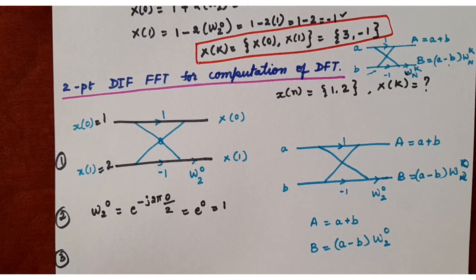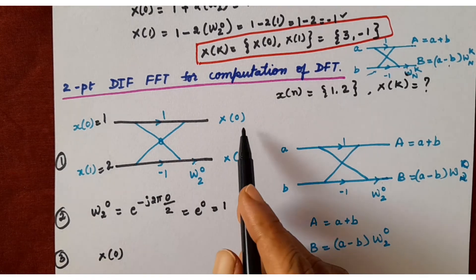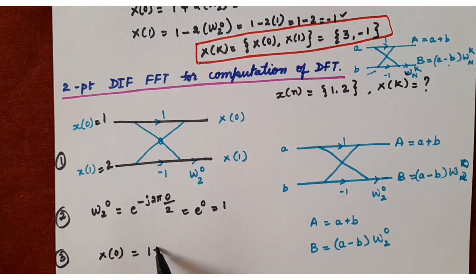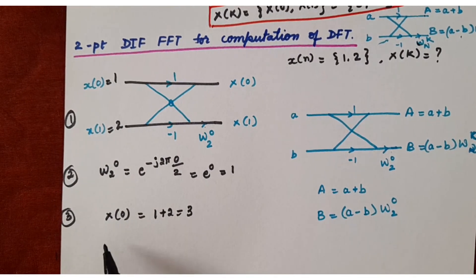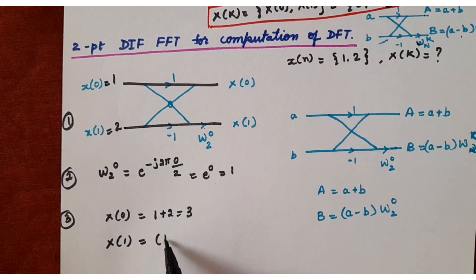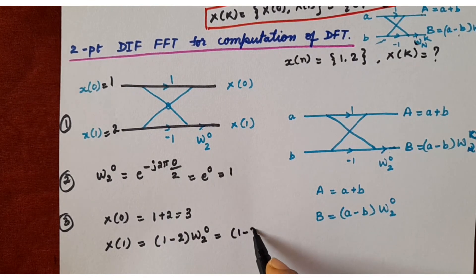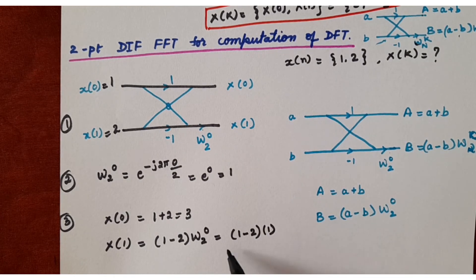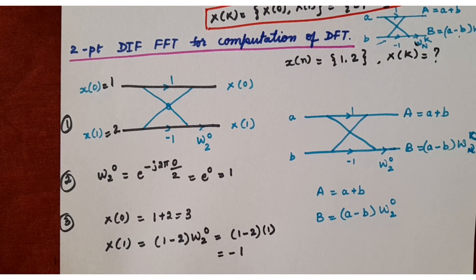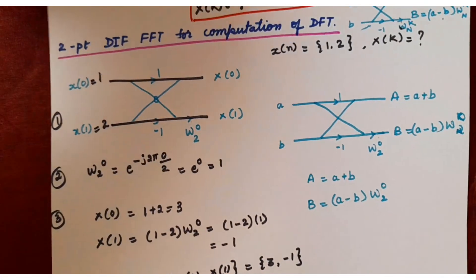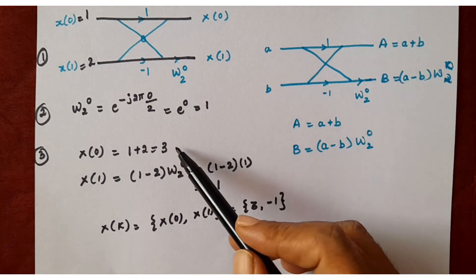The third step is to calculate the output values. For capital X[0], the equation is A + B: A = 1, B = 2, so X[0] = 1 + 2 = 3. For X[1], it is (A − B)·W_2^0: that is 1 − 2, and W_2^0 = 1, so X[1] = −1. Therefore X[K] = {X[0], X[1]} = {3, −1}.